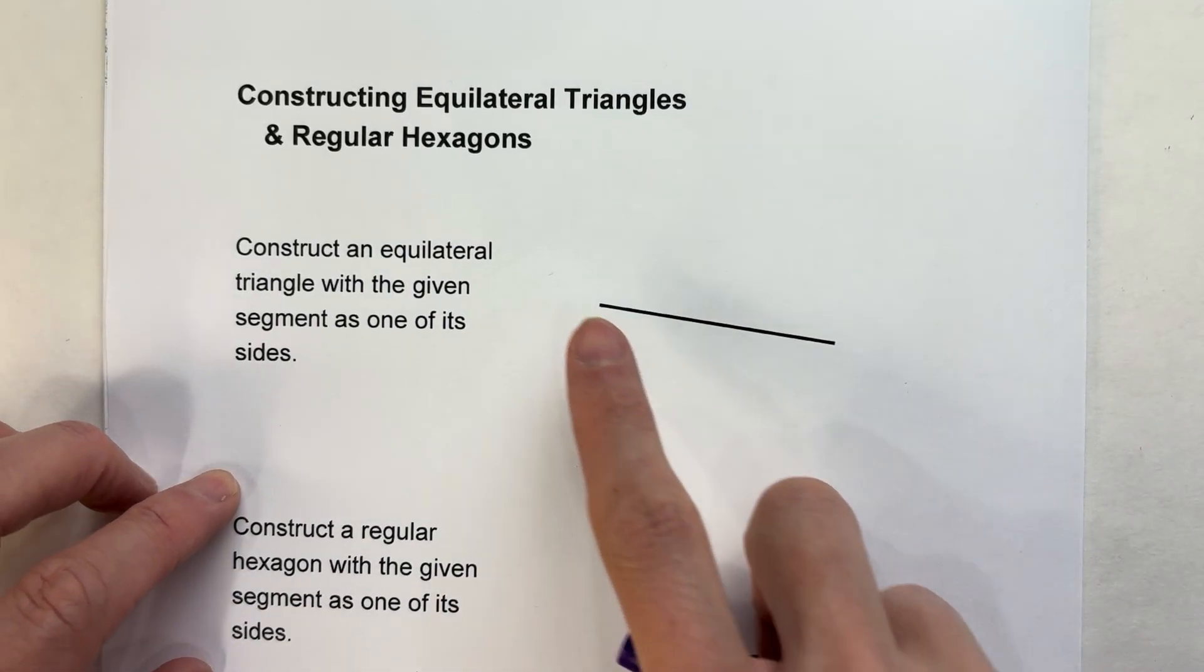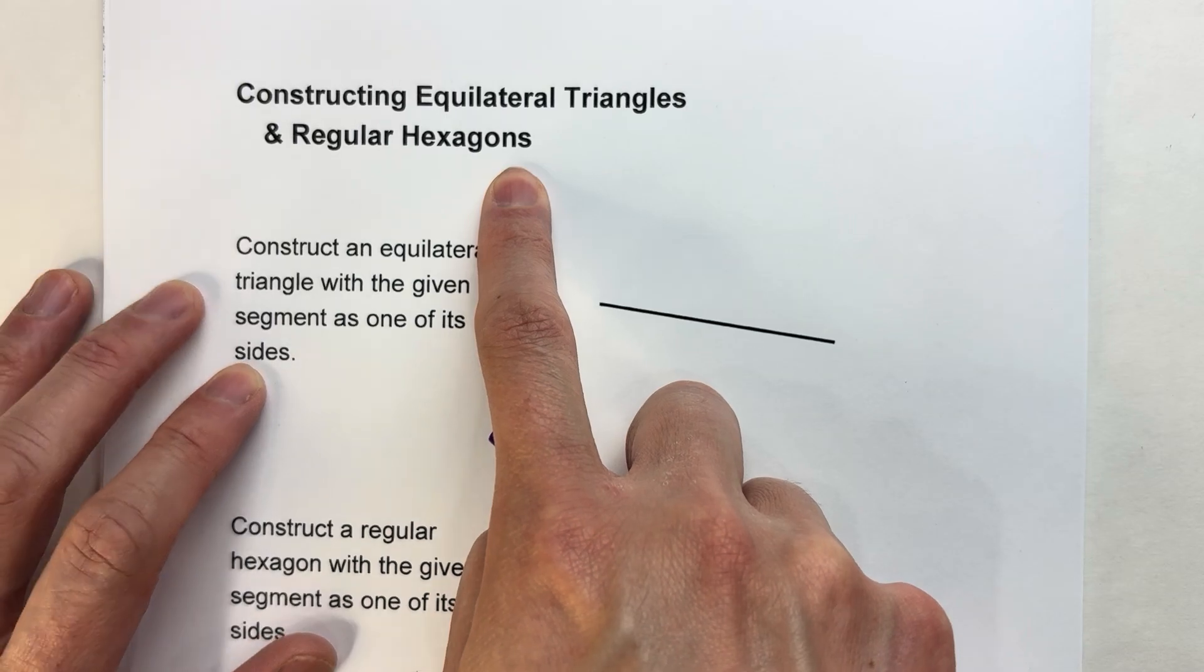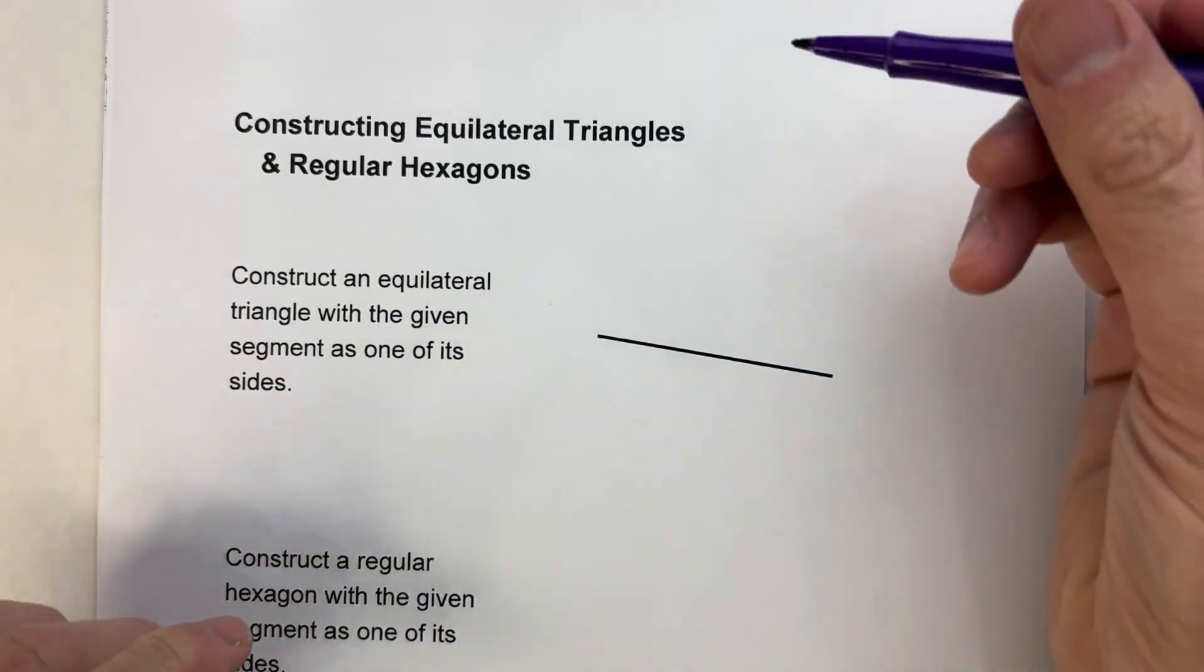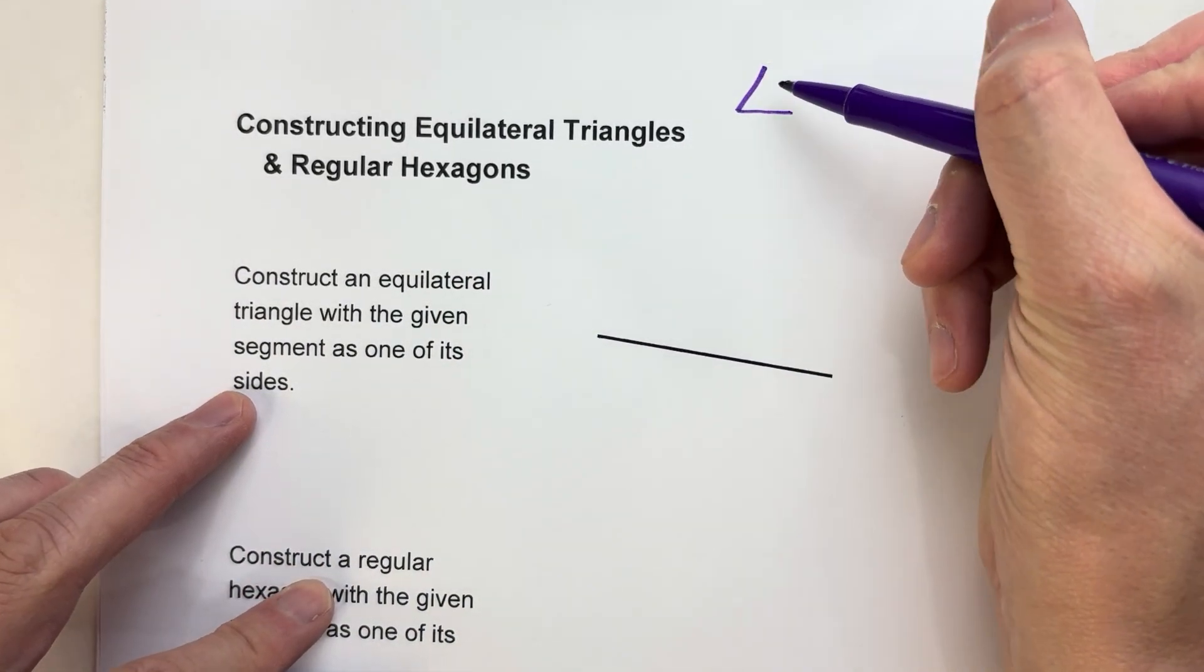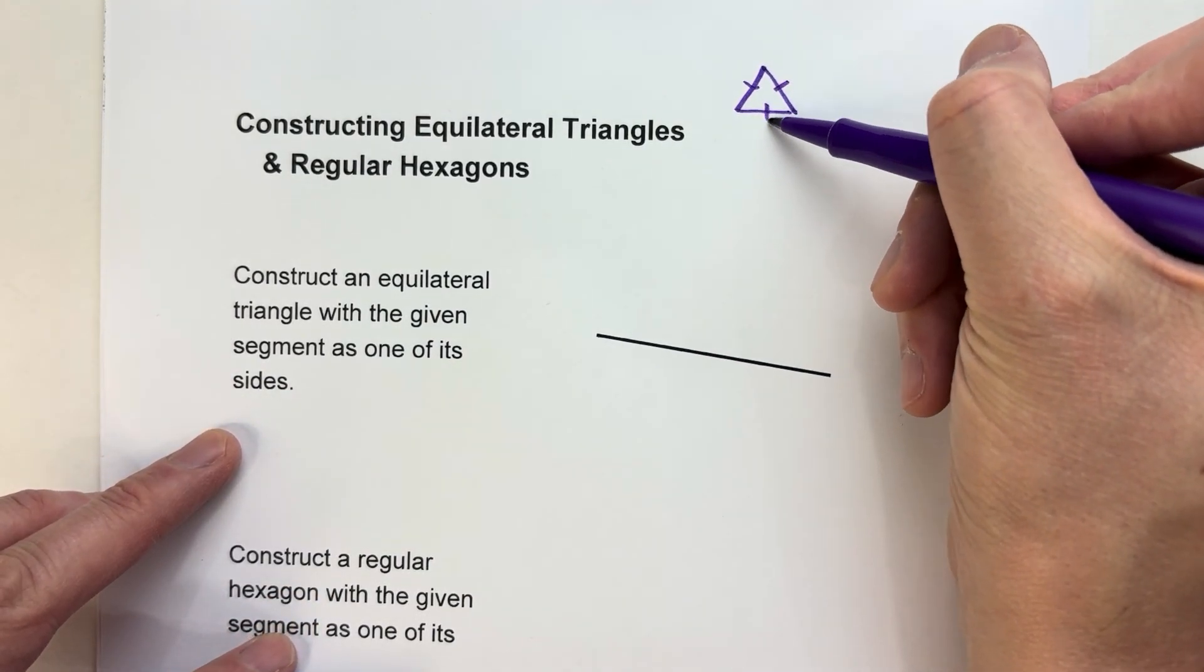Today we are constructing equilateral triangles and regular hexagons. Just a refresher: an equilateral triangle is a triangle where all three sides are the same length.